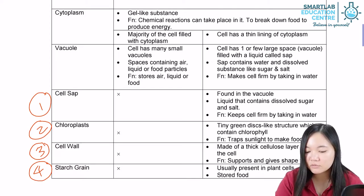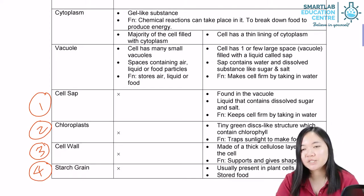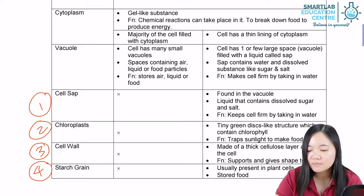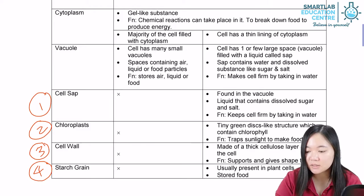Animal cells do not have starch grain. They do not produce starch, really. They produce glycogen. But plant cells do.